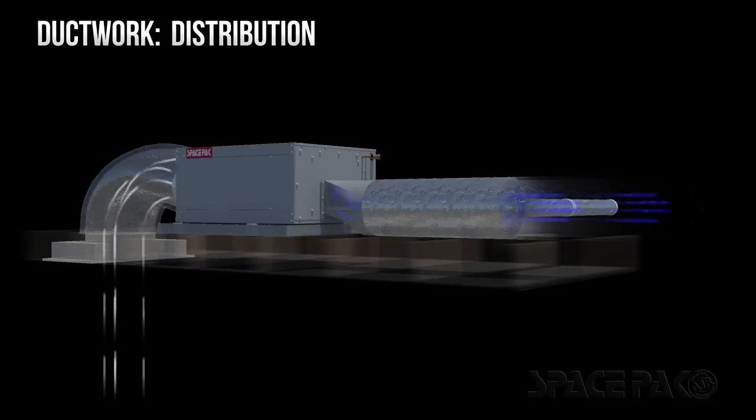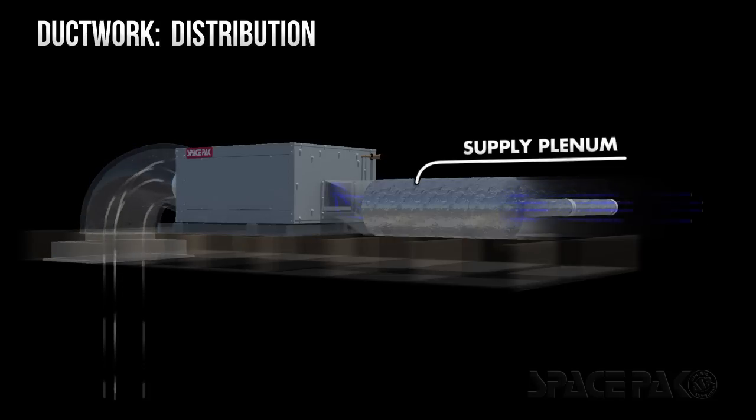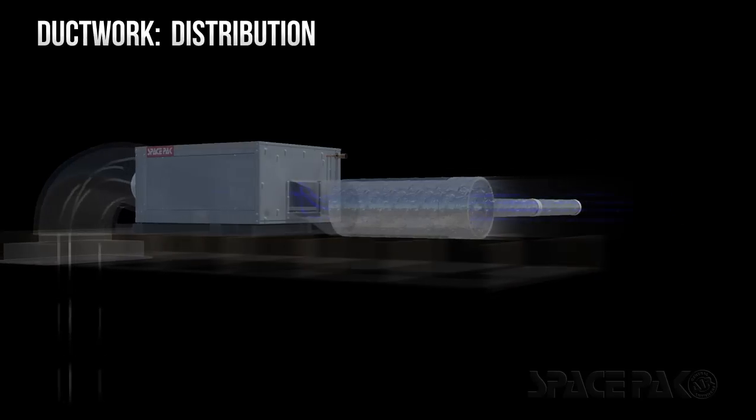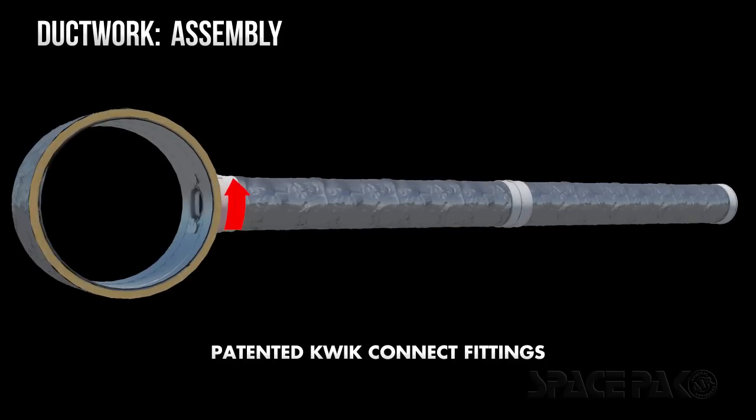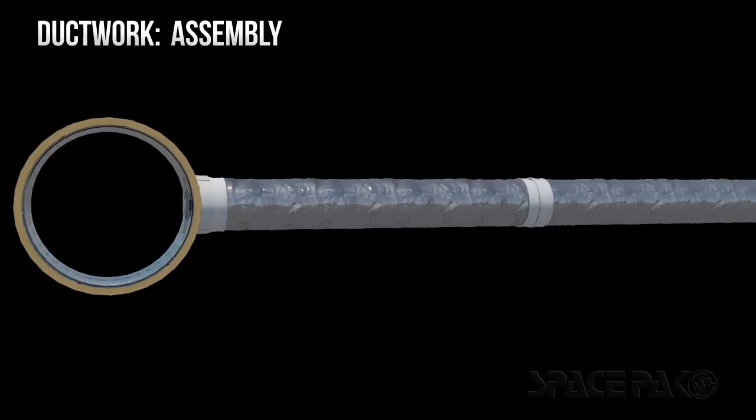Now let's explore SpacePak's ductwork. When conditioned air leaves the air handler, it enters a supply plenum which transports that air to the flexible ducts. The insulated 2-inch supply ducts easily attach to the plenum using SpacePak's patented quick connect fittings.